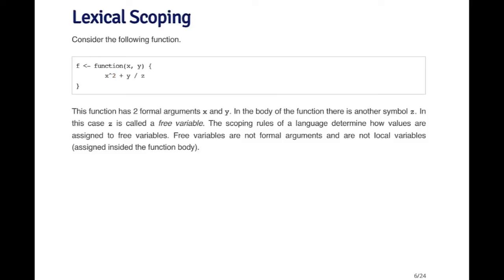Take a look at the following function. It has two formal arguments, x and y. The body squares x and adds the ratio of y divided by z. x and y are clear, but where did z come from? x and y are formal arguments, but z is what's called a free variable because it wasn't defined in the function header. The question is: what value do we assign to z, assuming that values were inputted to the function for x and y? The scoping rules of the language determine how we assign a value to a free variable like z.